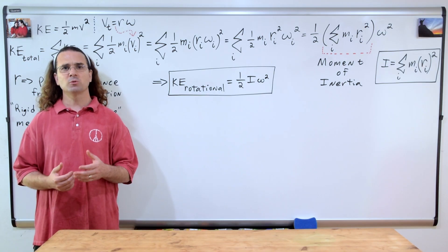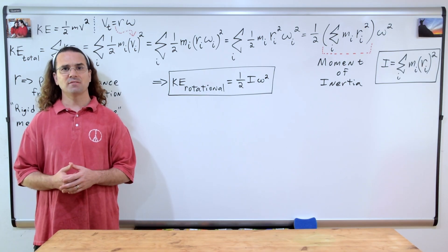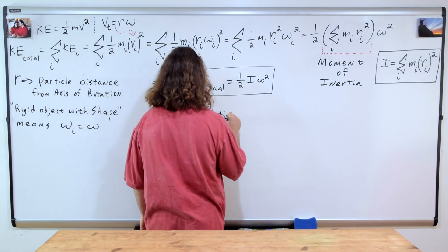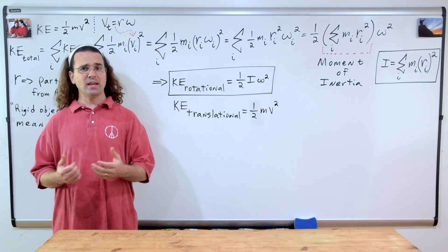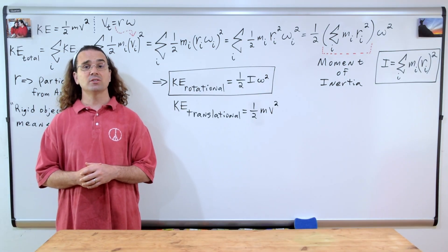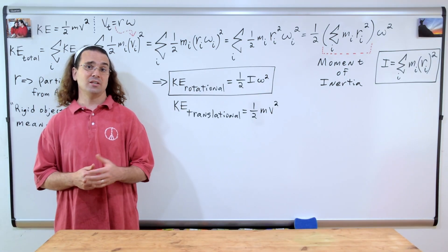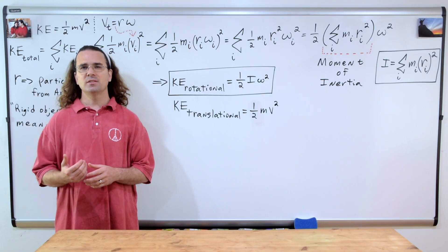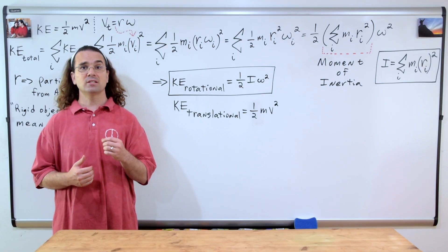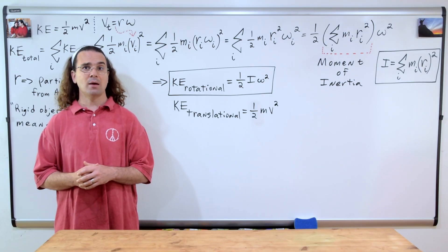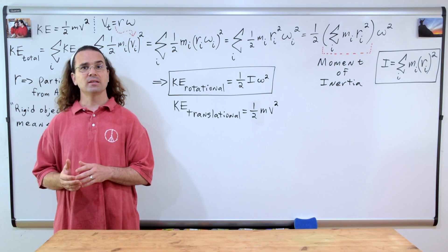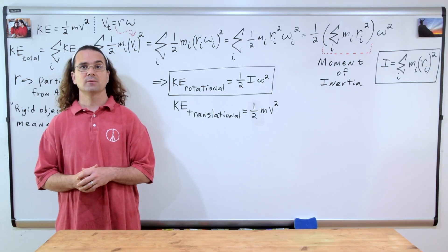Now that we have rotational kinetic energy defined, we need to more specifically identify the original kinetic energy equation. The kinetic energy we have been using up to this point is called translational kinetic energy. It is the energy associated with the motion of the center of mass of an object moving from one point in space to another point in space.